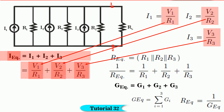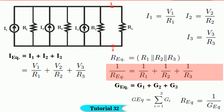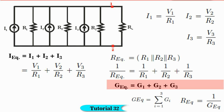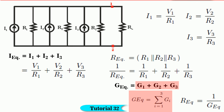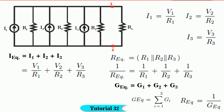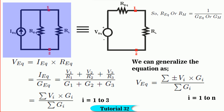By substituting, we get I equivalent = V1/R1 + V2/R2 + V3/R3, and R equivalent = R1 parallel R2 parallel R3. So 1/R_equivalent = 1/R1 + 1/R2 + 1/R3, or G equivalent = G1 + G2 + G3, where G = 1/R. G equivalent equals the sum of Gi from i=1 to 3, and R equivalent = 1/G equivalent. Using I equivalent and R equivalent, the equivalent circuit is shown in figure — this is nothing but Norton's equivalent circuit.